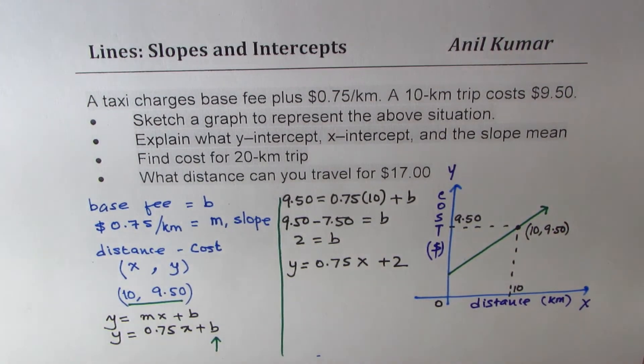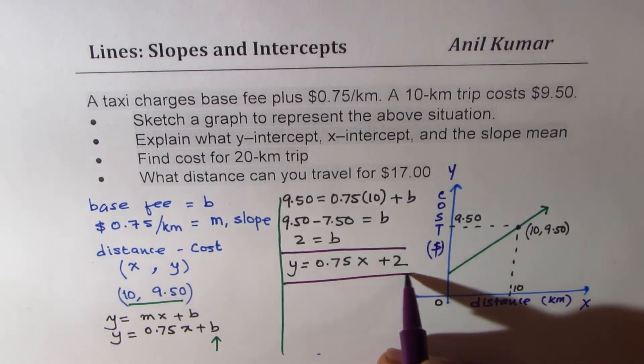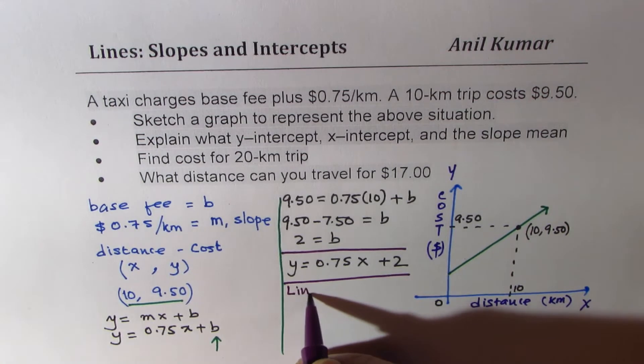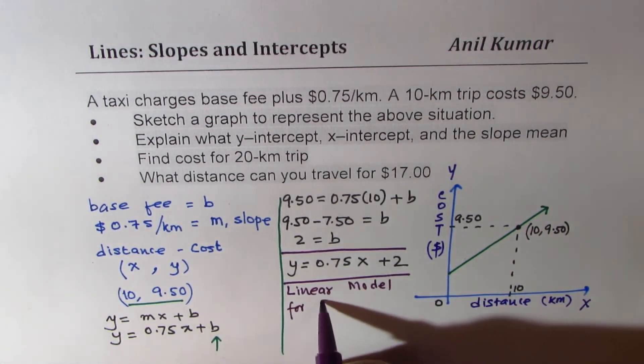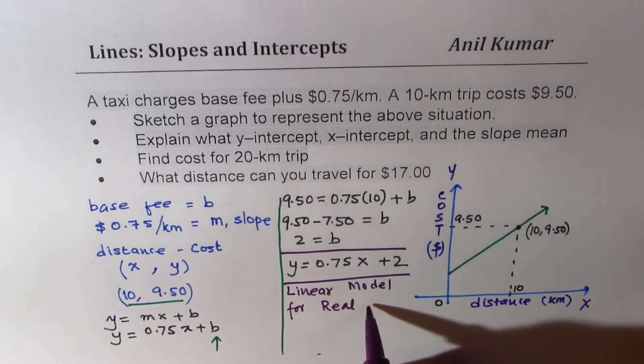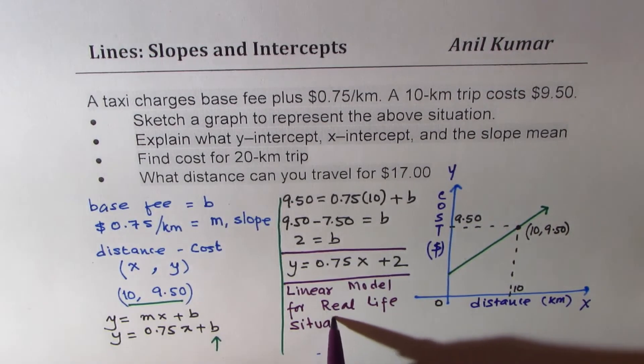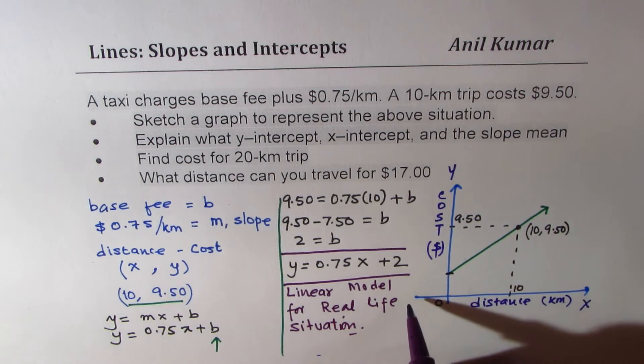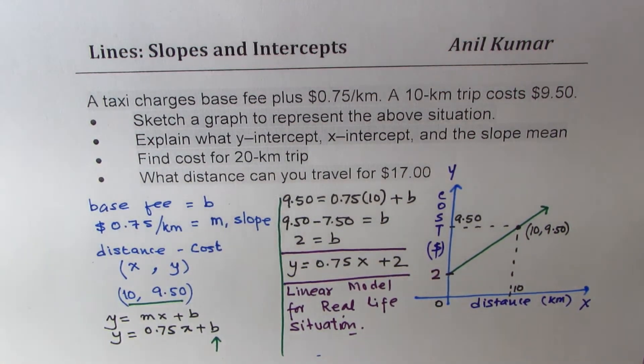And therefore, we get our relation y = 0.75x + 2. So I hope these steps are absolutely clear. So that is how you model the situation. This is what we call a linear model for real-life situation.